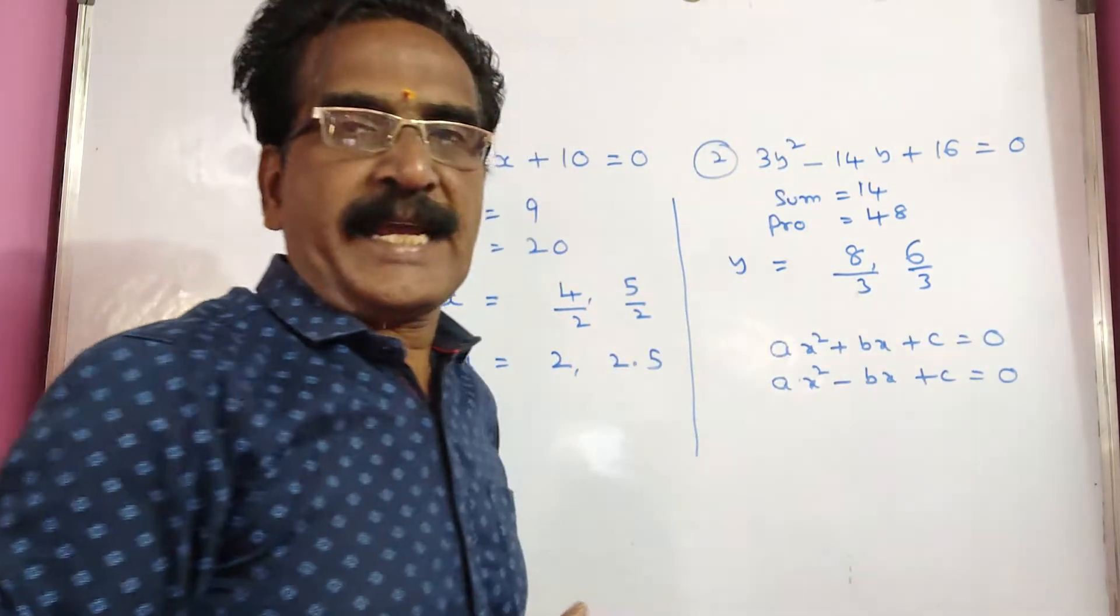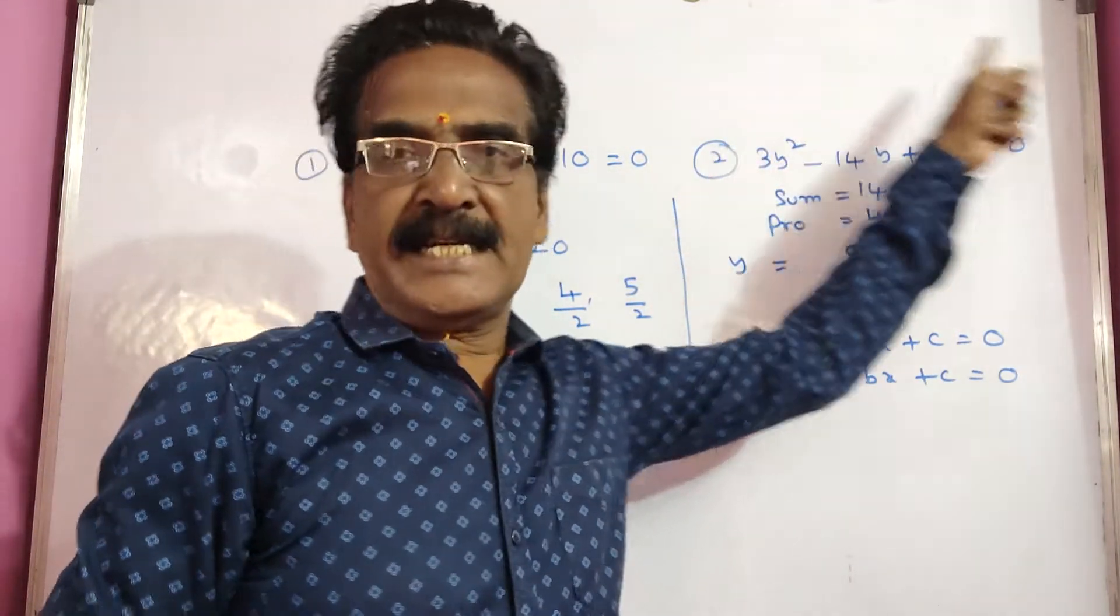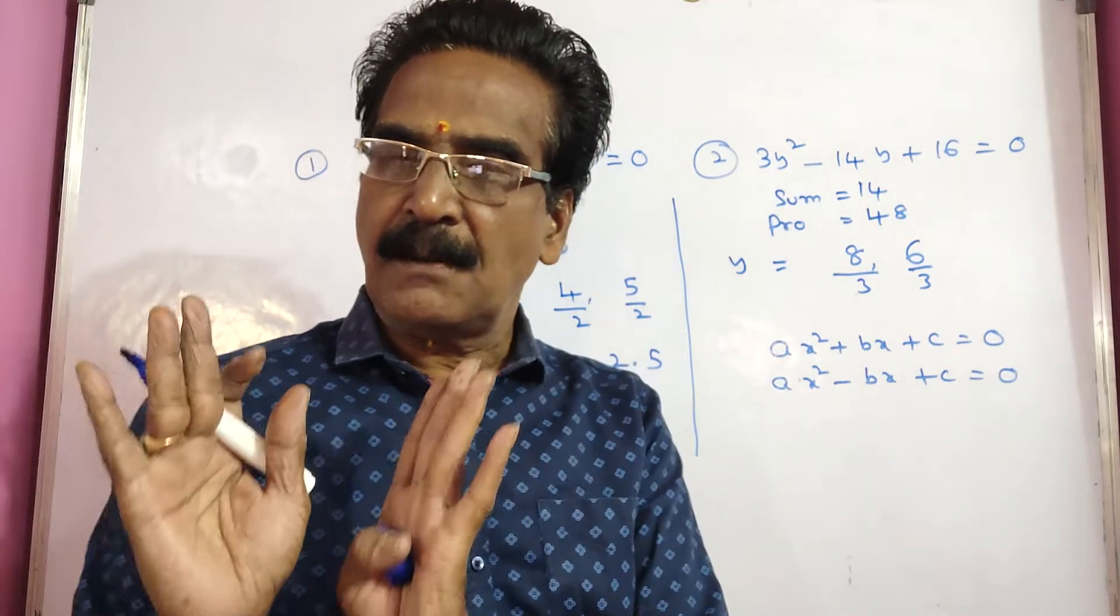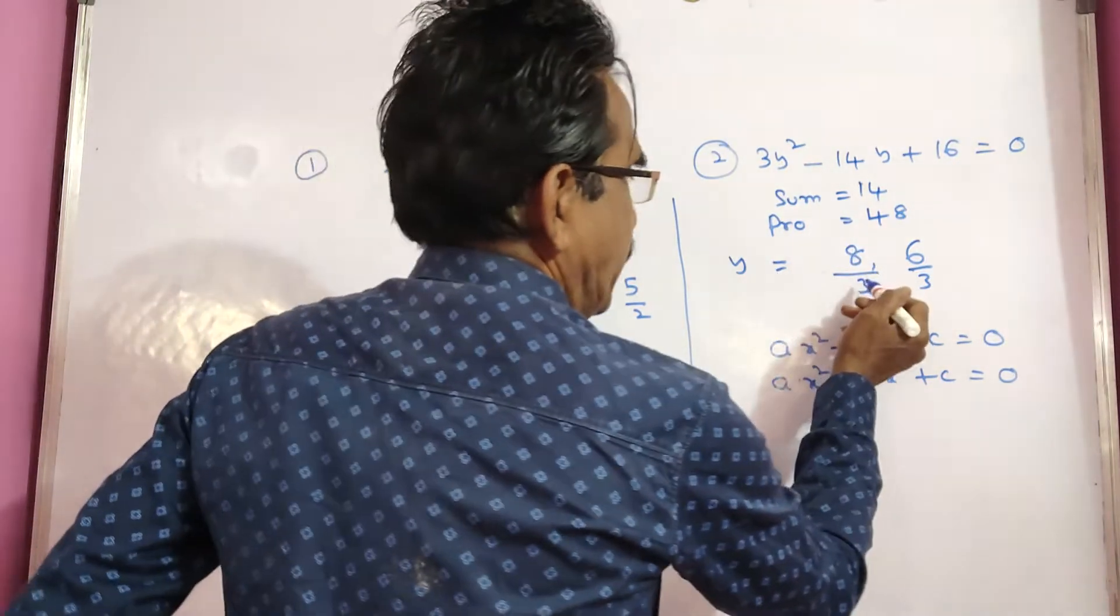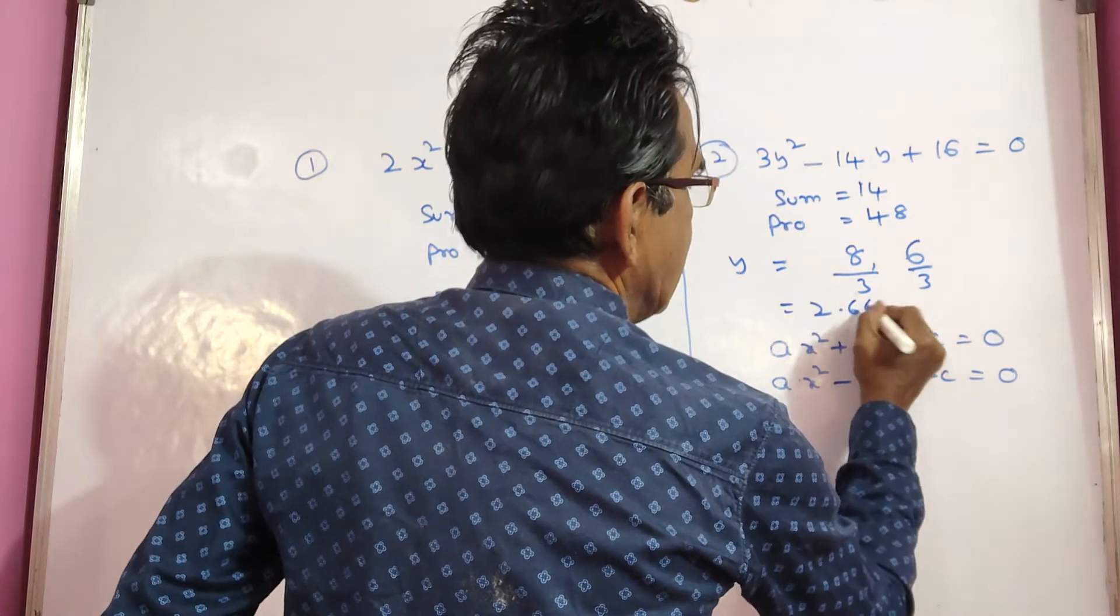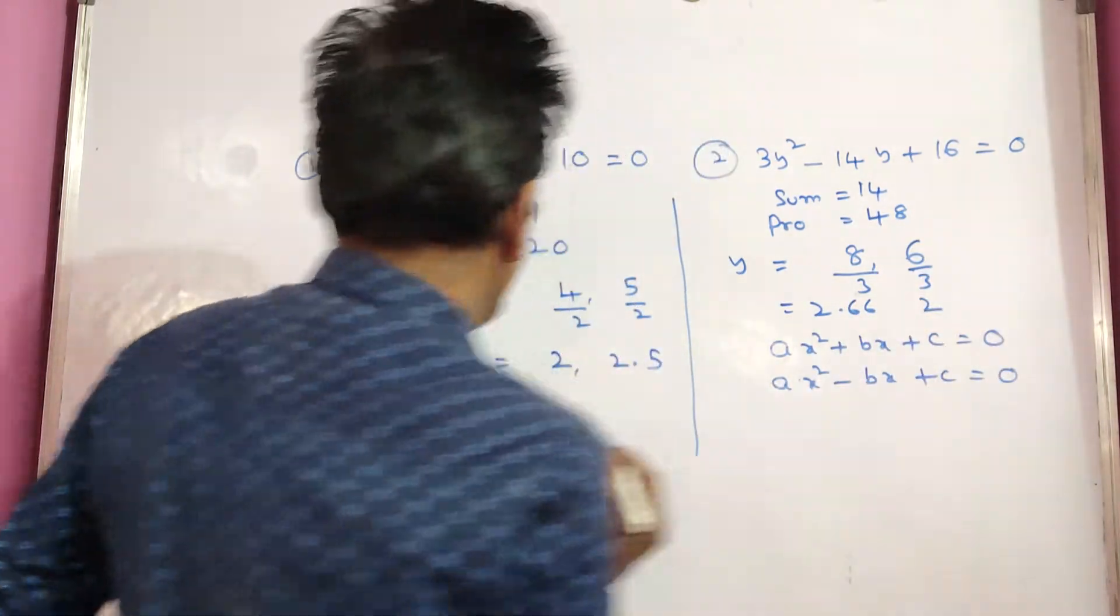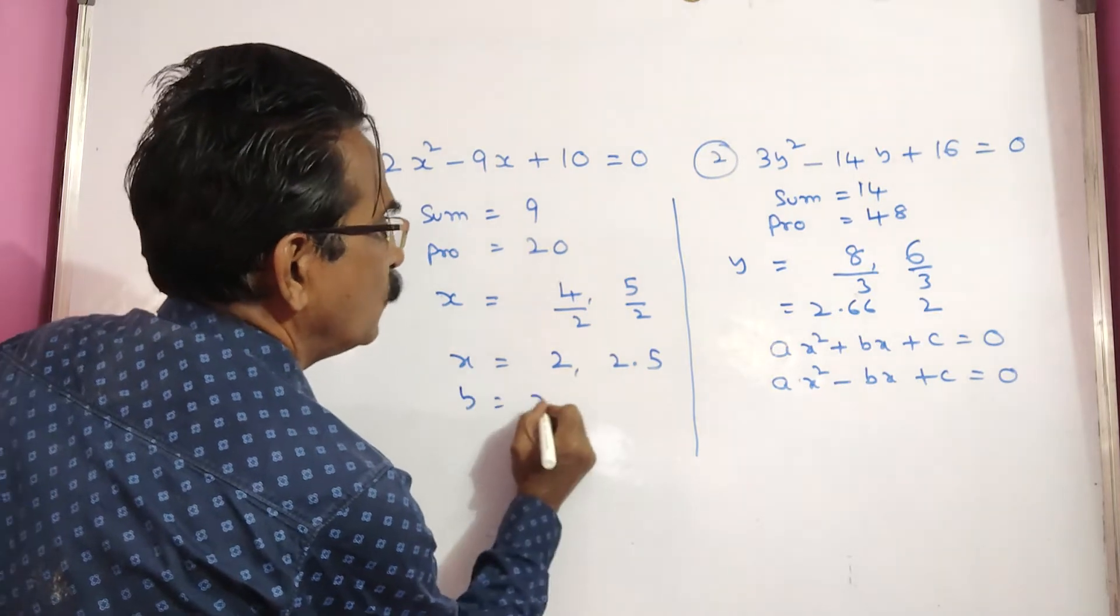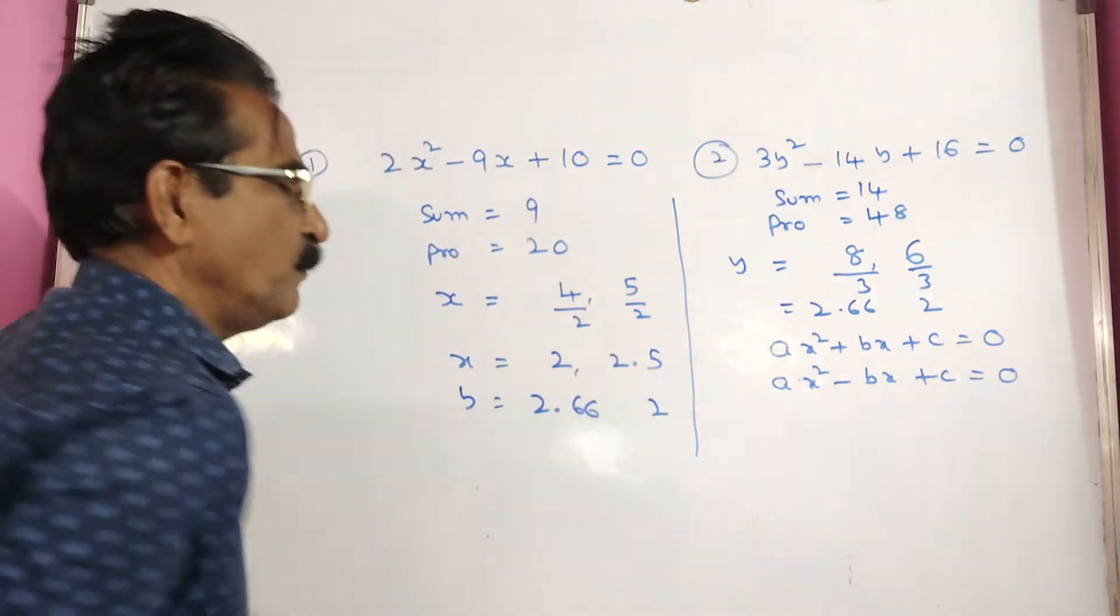And then coming to sign, b is minus and c are plus, then both the roots are positive. So 8 by 3, 8 by 3 means 2.66. Here 2. So y values are 2.66 and 2.